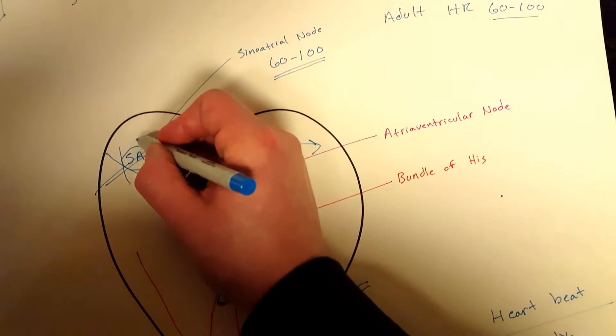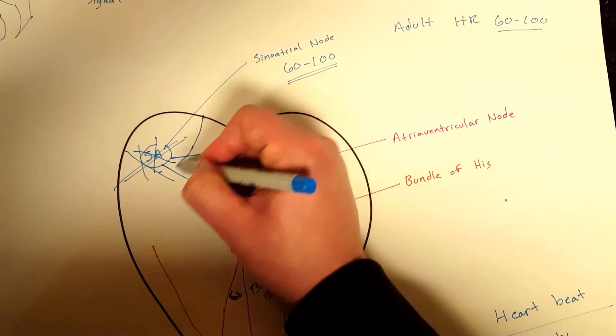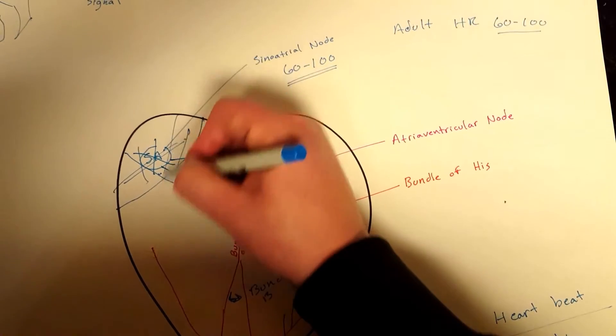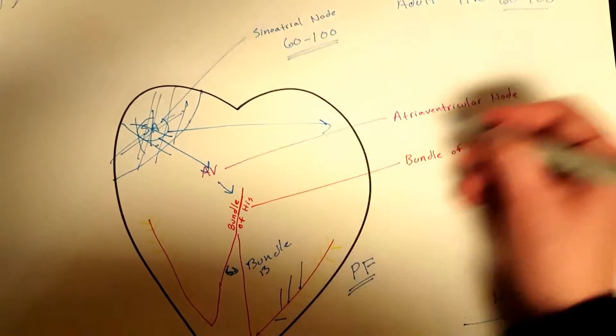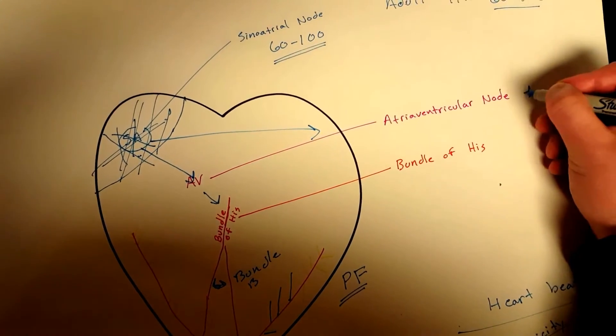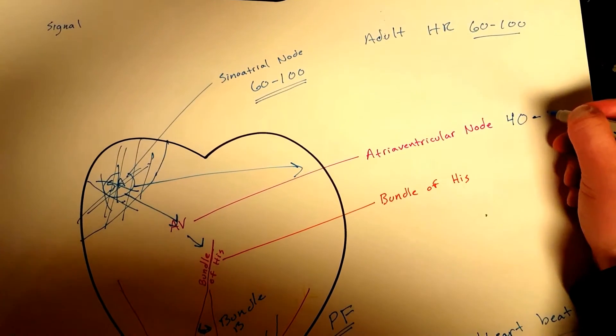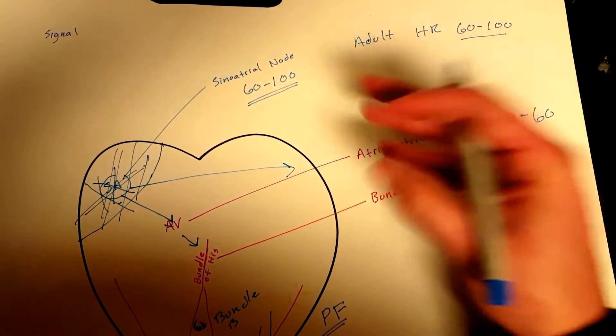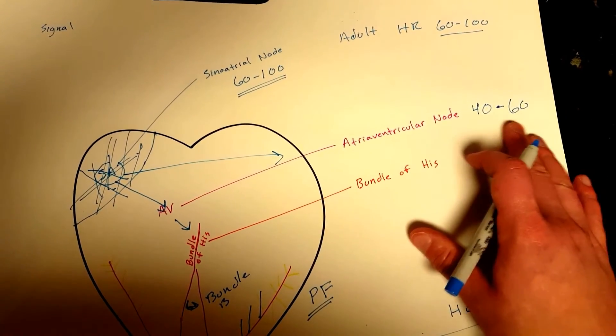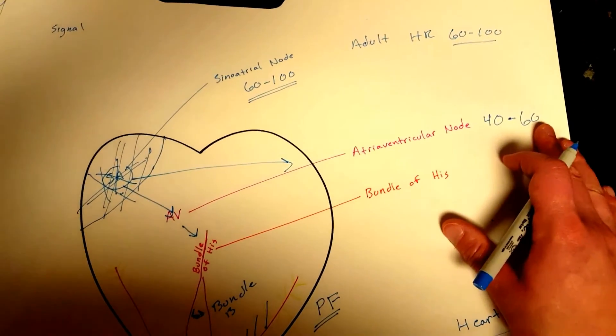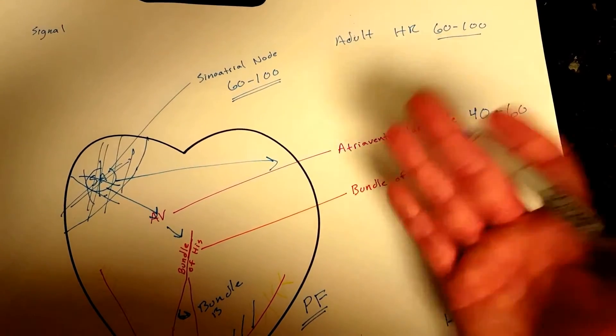Now let's say this for some reason isn't working because you have tissue death, because O2 is not getting here and this is starting to die off. Well, your AV node will take over, and your AV node will send out its default, between 40 to 60 signals of electricity per minute. So now your patient is going to be in bradycardia. Brady means slow, cardio means heart, slow heart rate.